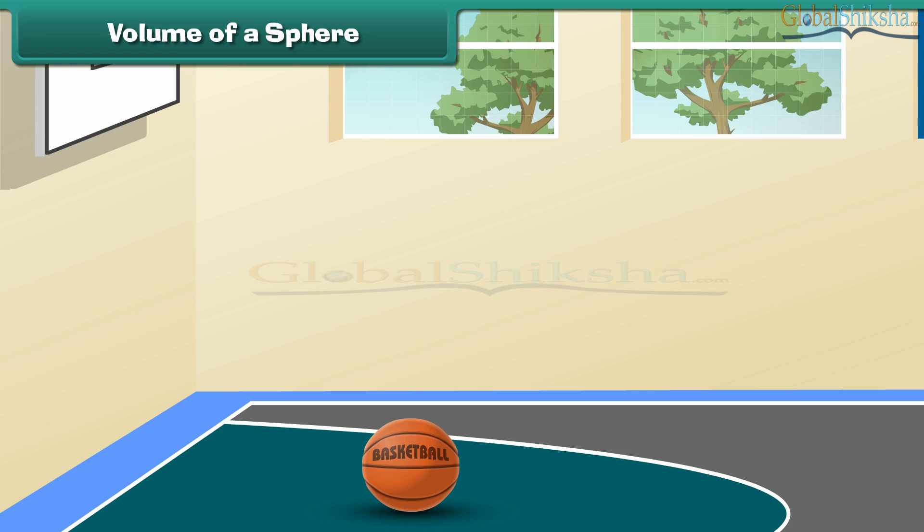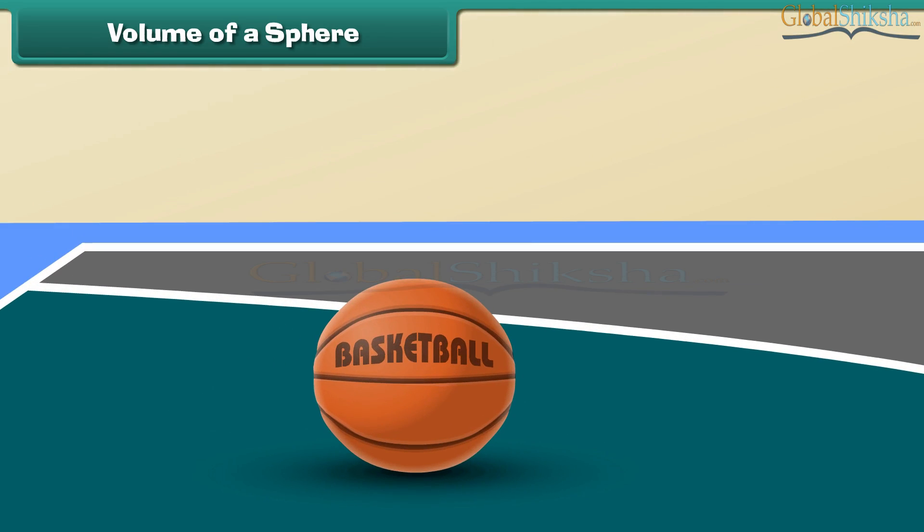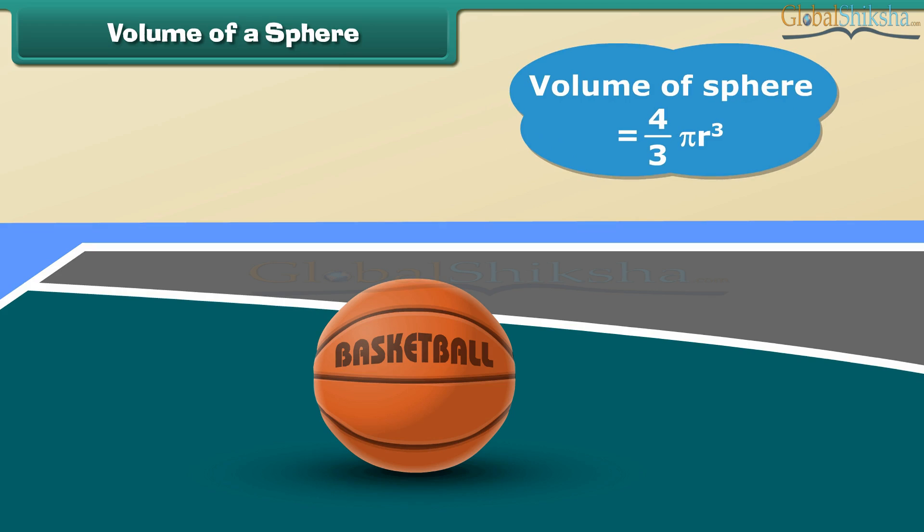What do we call this round ball? Yes, it's a sphere. It looks the same from every angle, isn't it? The formula to find the volume of this sphere V is 4 over 3 pi R cube.